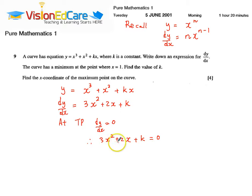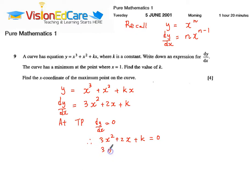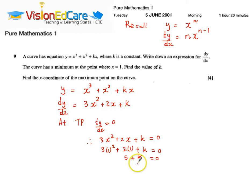At this point, x is equal to 1. So, what we are going to do is substitute the value of x into this equation to get k. At x equals 1, we have 3 times 1 squared plus 2 times 1 plus k equals 0. Upon simplifying the left hand side, we get 5 plus k equals 0.